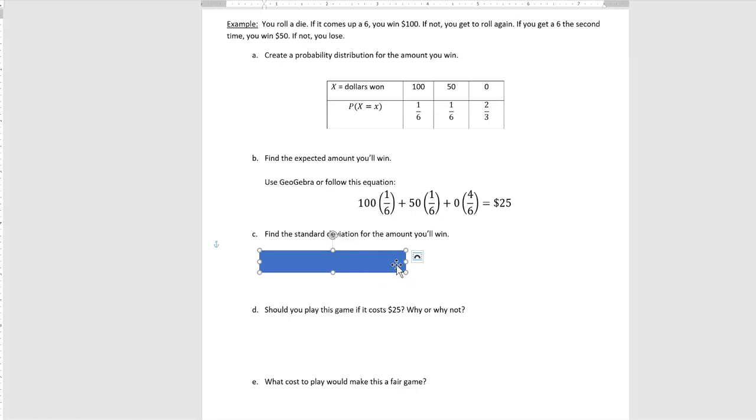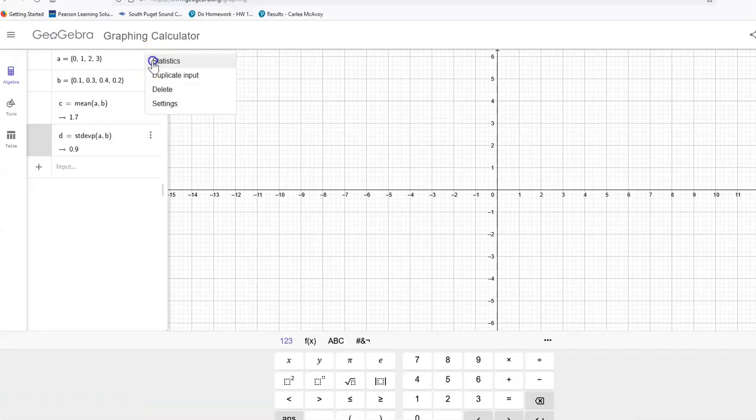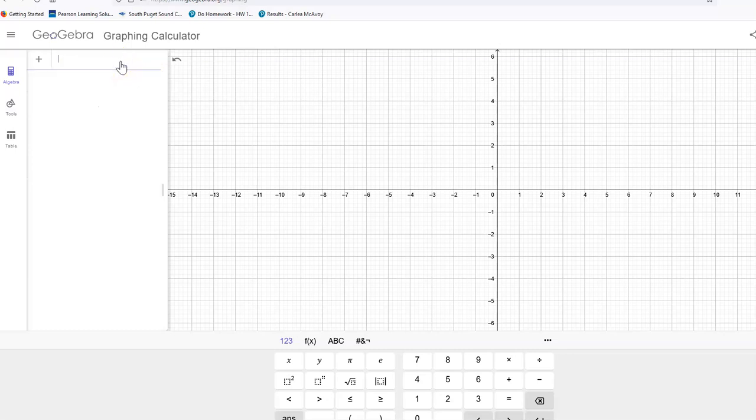And the second one says find the standard deviation of the amount you win. And this one I did use GeoGebra because the calculation for that is laborious. So let's go in and do that. I think I'll just go ahead and delete these. Sometimes it gets easier just to get those out of the way.